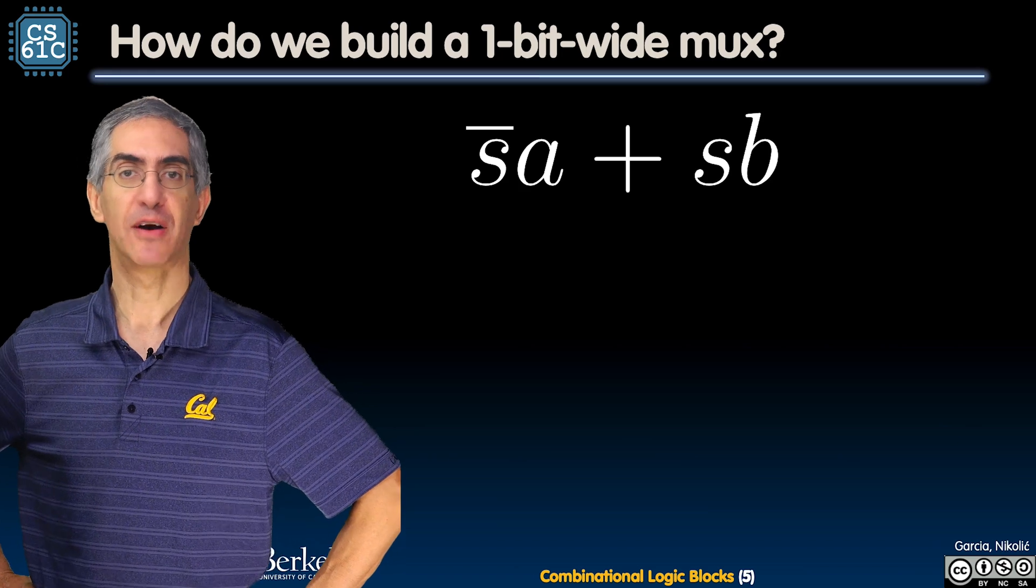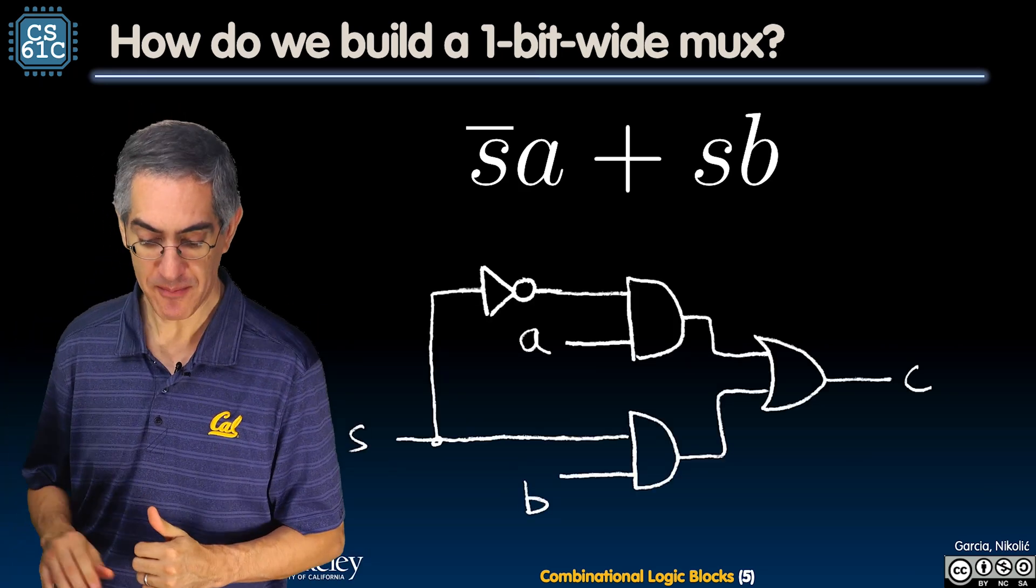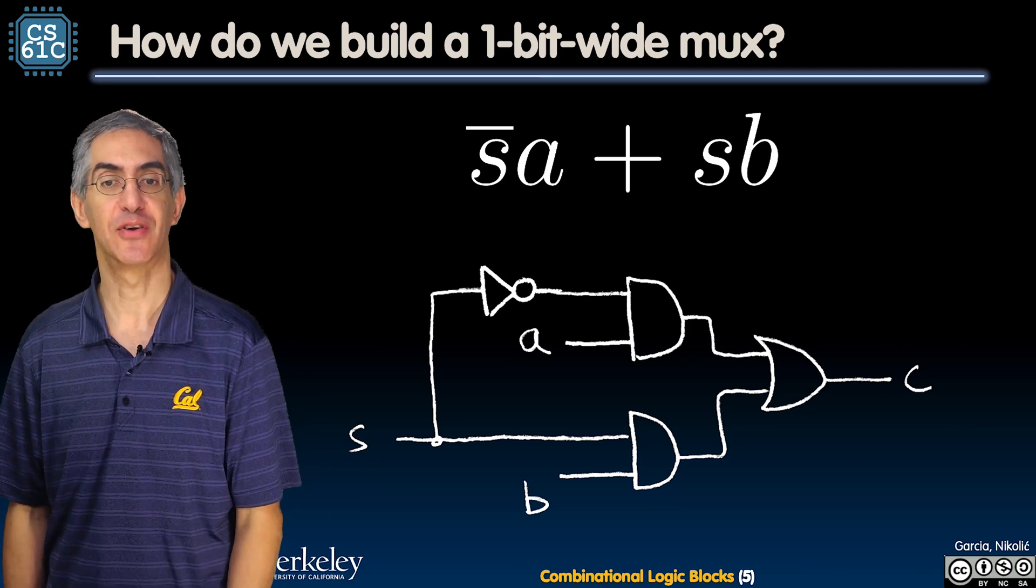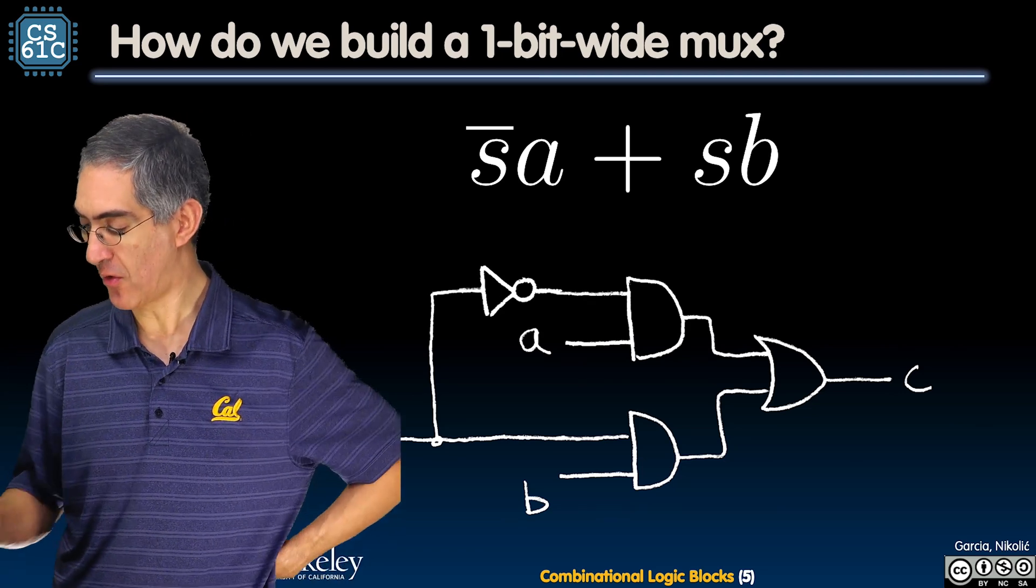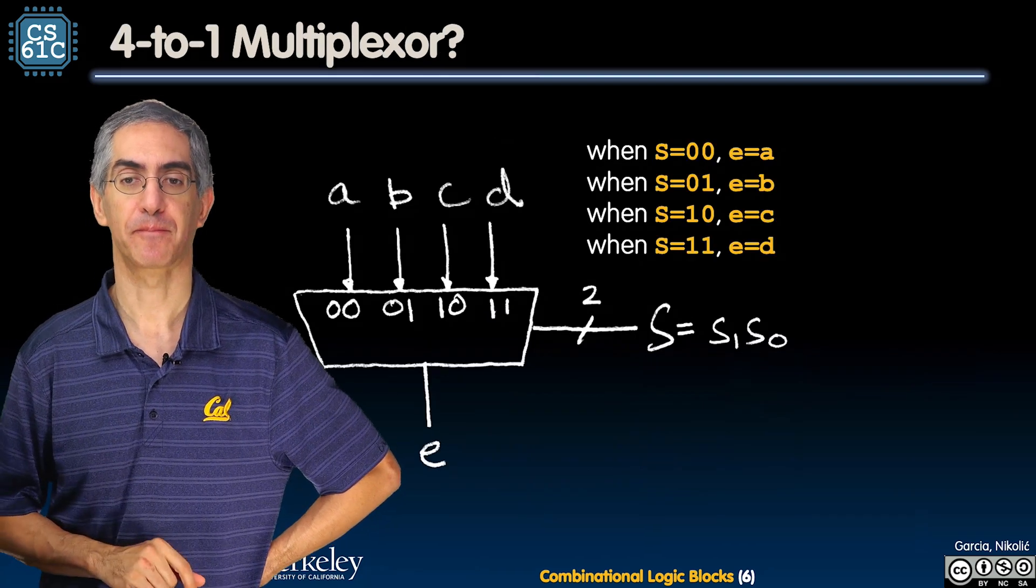So, how do we build a one-bit wide mux? None of this is new. This is all review. Not S and A or S and B. There it is. Pretty slick. Pretty simple. Not S and A or S and B. Seen that before? Nothing really special there.